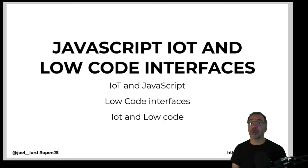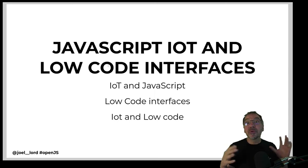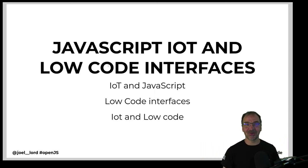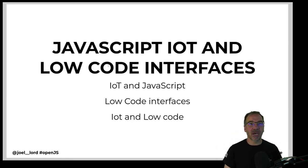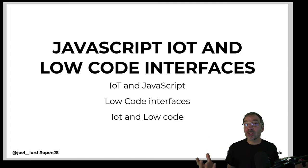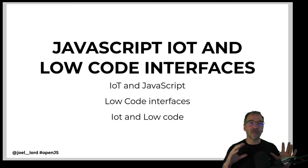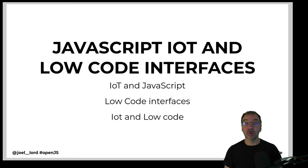This is what I'm going to cover today. I'm going to talk about IoT and JavaScript — how we can use JavaScript to build IoT stuff and connect devices to the world. Typically we tend to think about C++ to build embedded stuff, but it turns out you can do a lot of cool stuff with JavaScript. I'm also going to talk about low-code interfaces — a trending concept where you don't actually need to code — and then show you how I've used both IoT devices and low-code interfaces to solve problems around my home.